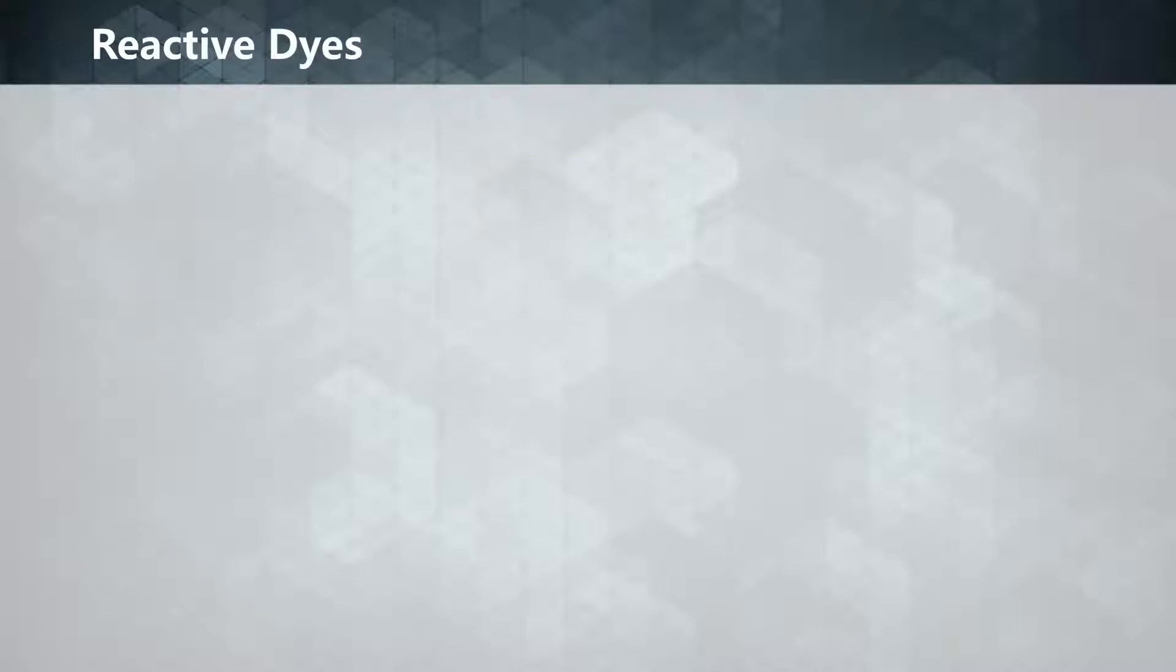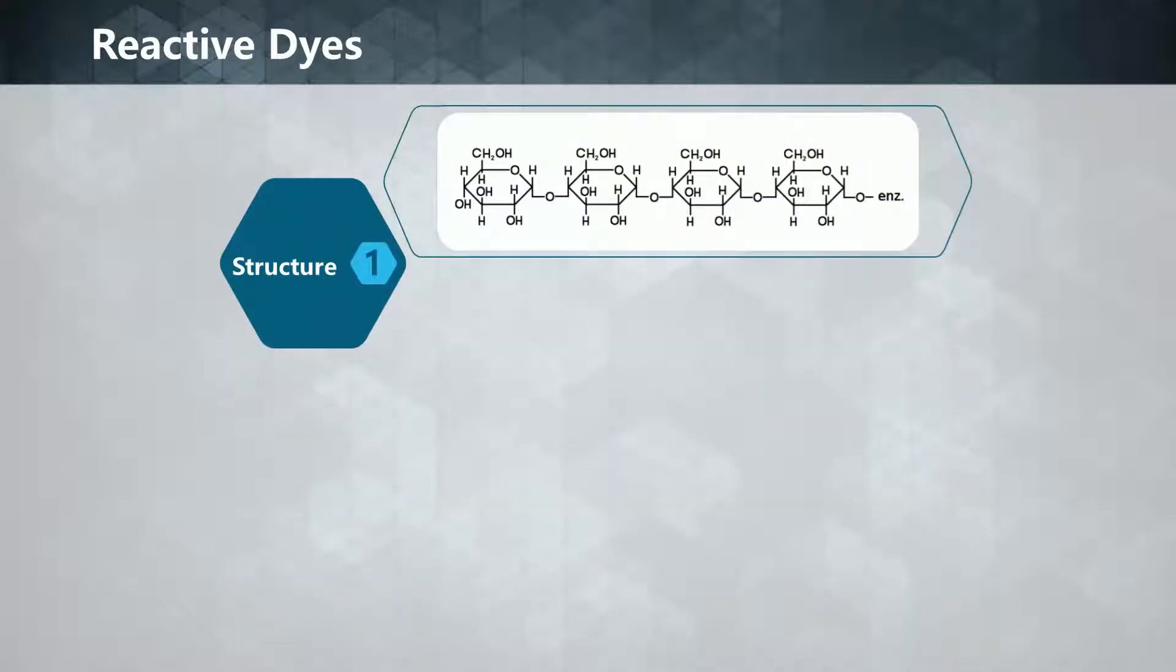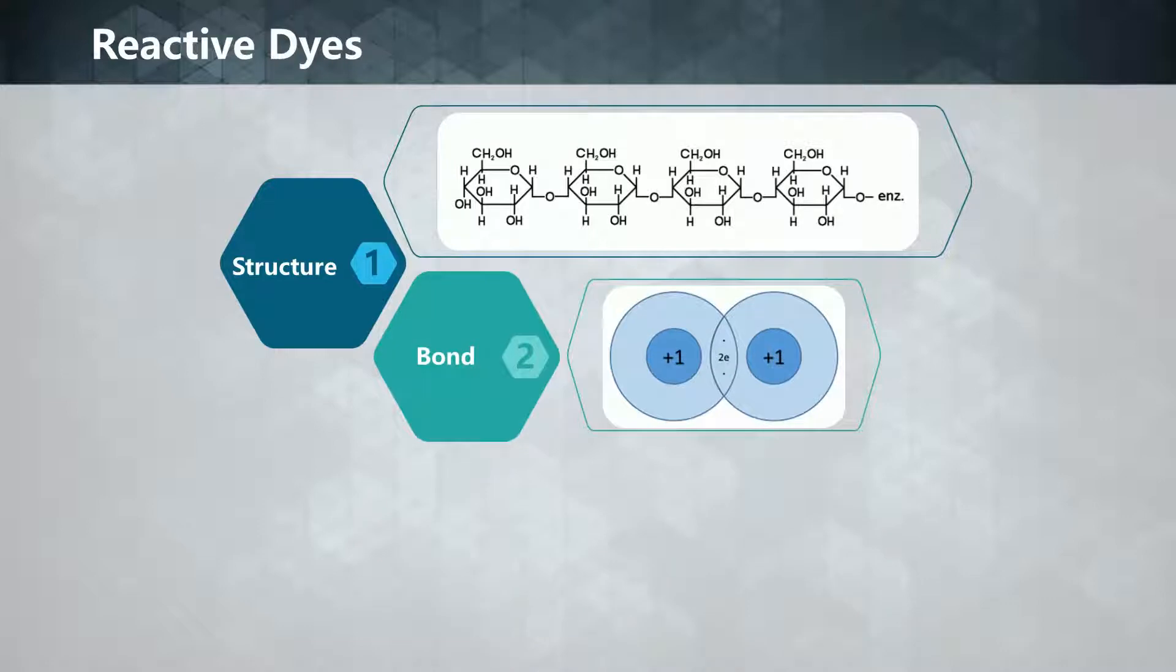Reactive dyes utilize chromophores attached to substituents that are capable of reacting directly with the fiber. The covalent bonds of reactive dyes with natural fibers make reactive dye the most permanent dye. Reactive dyes are the best choice for dyeing cotton and other cellulosic fibers in homes or art studios.